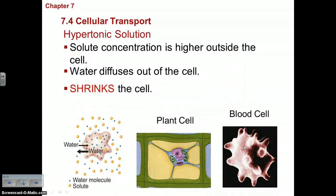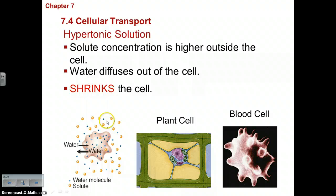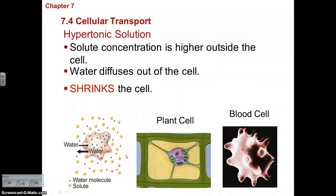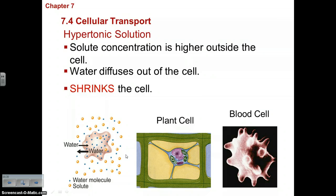The trick to remember hypotonic: if the cell gets as big as a hippo, it was placed in a hypotonic solution. In a hypertonic solution, the solute concentration is higher outside the cell, meaning water concentration is low outside and high inside. Water travels from high inside to low outside, so the cell shrivels up. The memory trick: someone who is hyper and always running around will be really skinny — so hyper means nice and skinny.